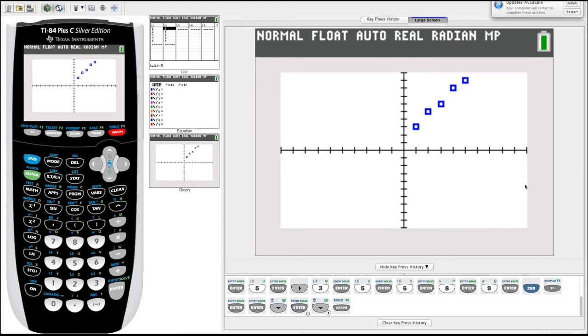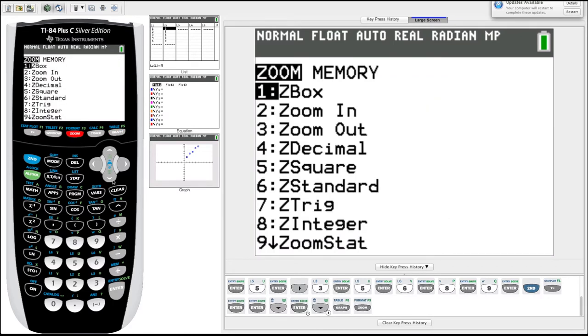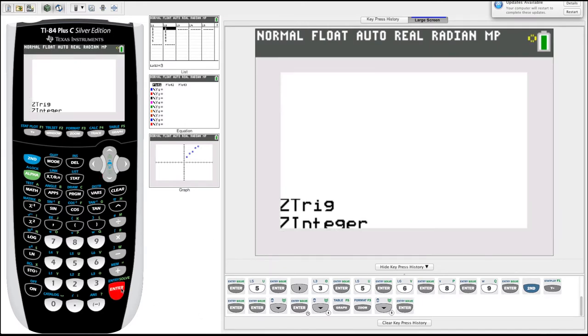But we have kind of a lot of open space here that we don't really need to have. I'd like to kind of zoom in on the data. So we can just go over to zoom. And there's a special zoom down here called number nine called zoom stat. And it will fit our screen perfectly to the data we have. So let's hit enter, arrow down to zoom stat, hit enter. Now that's much better.